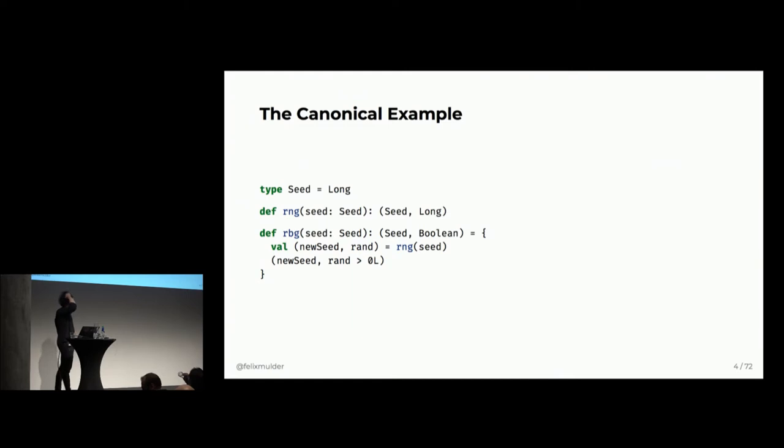So, let's take this canonical example of how we model state. Essentially what we'll do is that we'll pass the state along. So, if we want to create a random number generator, or in this case a pseudo random number generator, we'll pass along some initial seed that's known ahead of time. And then we'll get back a tuple of a new seed along with the randomly generated number. And now, using our RNG function, we can simply create a random boolean generator just by reusing it and then checking if the random was greater than zero. So, this seems like a perfectly fine example of how to model state. It doesn't seem too difficult.